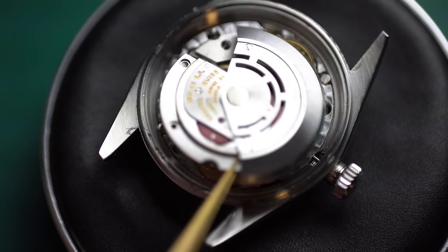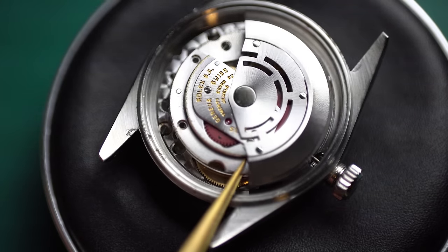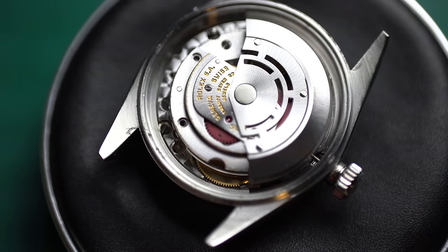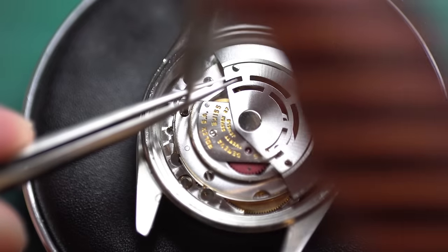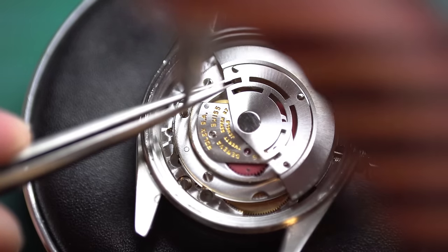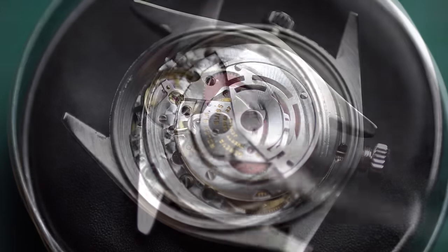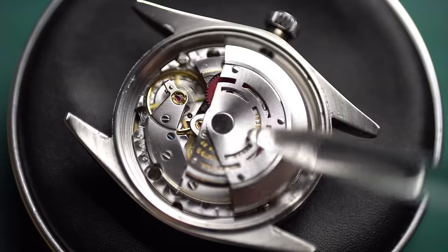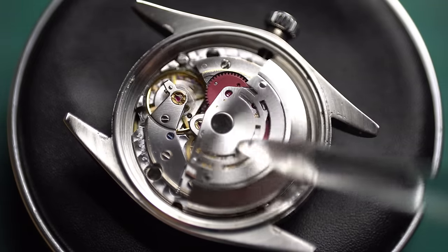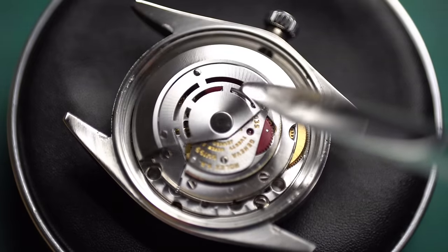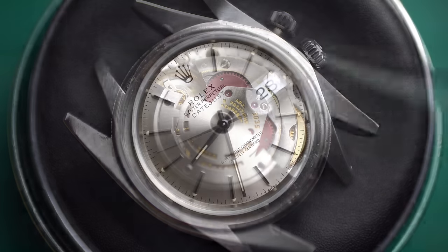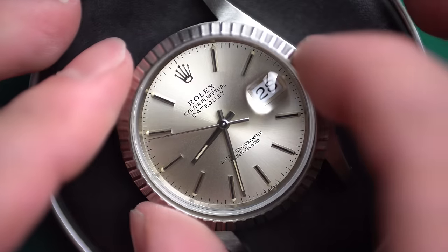And, lastly, to button this thing up, we're going to throw back on the automatic module. Now, once this thing is seated, I like to just give it a quick wind. Make sure that everything is working properly. Then, we can secure it down with the three screws. Now, checking the rotor. Making sure that this thing is running perfectly. All the wheels are engaging. Nice and smooth. This thing has full range of motion. And, now we can slap back on the bezel.